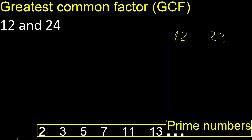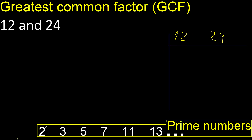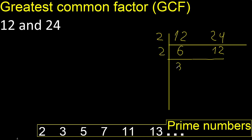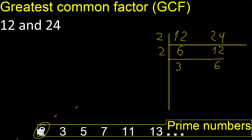12 and 24. Can 12 and 24 be divided by 2? Yes. Therefore, divided by 2: 12 divided by 2 is 6, 24 divided by 2 is 12. Can 6 and 12 be divided by 2? Yes. 6 divided by 2 is 3, 12 divided by 2 is 6. Cannot be divided by 2 again, because 3 cannot be divided by 2.